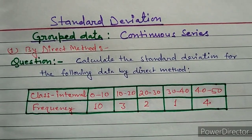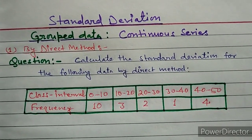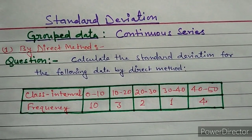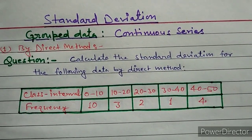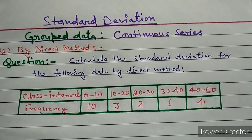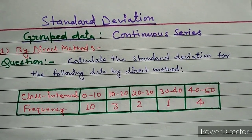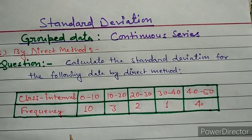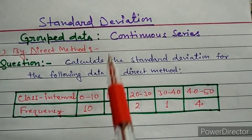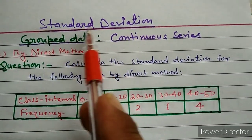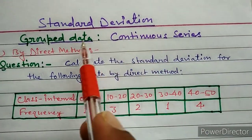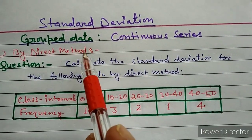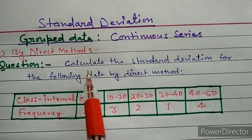The standard deviation for continuous series can be calculated by two methods. The first one is the direct method and the second one is the shortcut method. Now here we will understand how to calculate the standard deviation for continuous series of grouped data by the direct method with the help of this question.